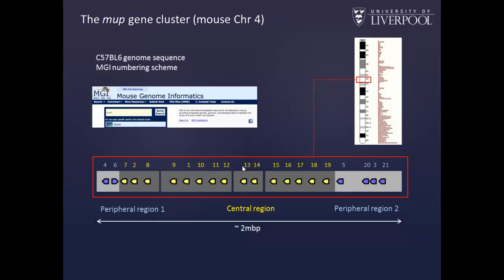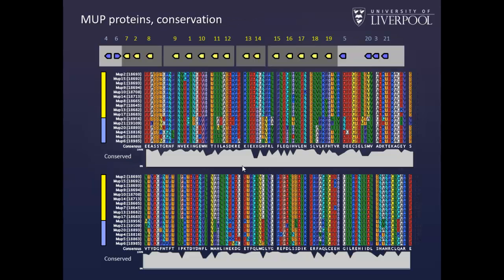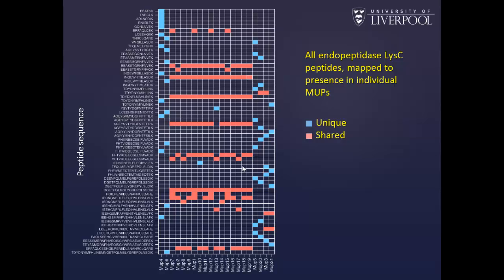When you come to the particular proteins we're interested in — the proteins of the MUP gene cluster — there are, at the moment, 21 known genes in this region of chromosome 4 in the mouse. If you look at the aligned protein sequences, it's not difficult to see that they are very similar. They're all 162 amino acids long in mature form, and you can see small differences, but by and large these are highly conserved proteins. That creates a problem because you have to find individual peptides appropriate for each isoform. We've had to change the protease from trypsin to endopeptidase-LysC because you generate larger fragments, which have a greater chance of capturing the isoform differences.